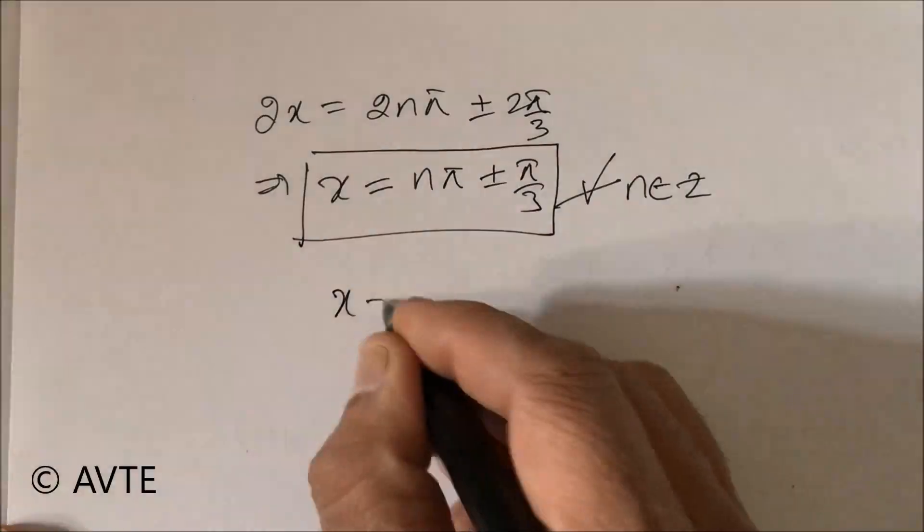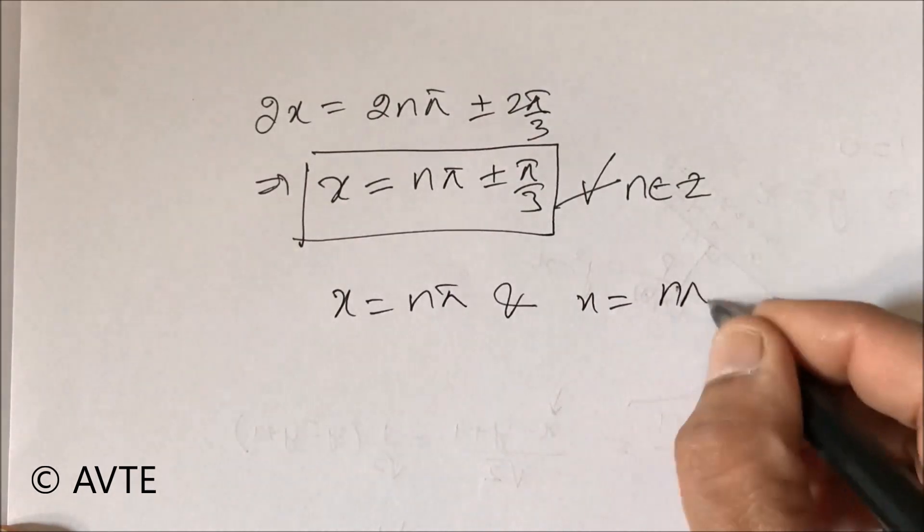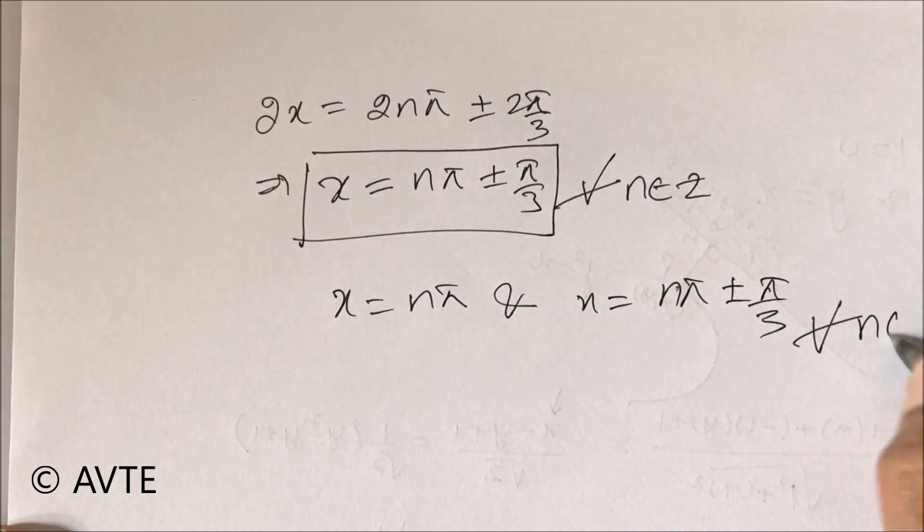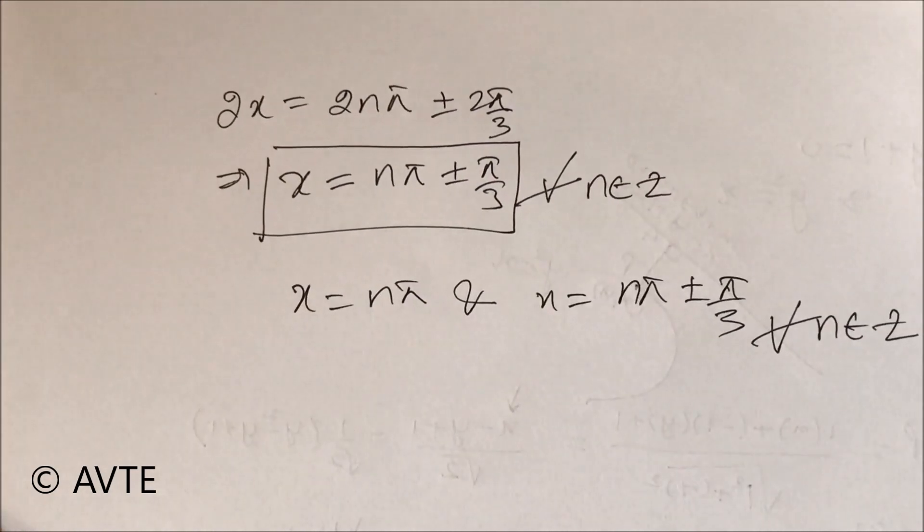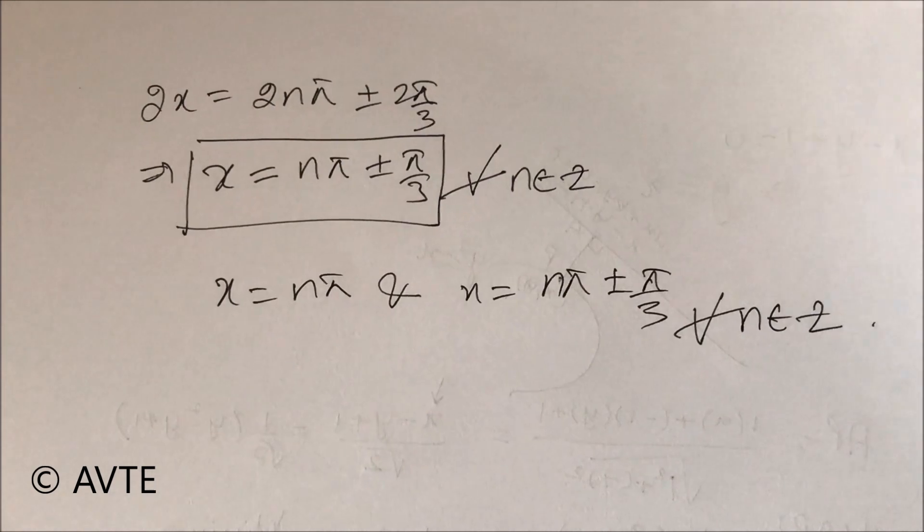So we have two answers. x is equal to n pi by 3 and x is equal to n pi plus minus pi by 3 for all the values of n belonging to integer.